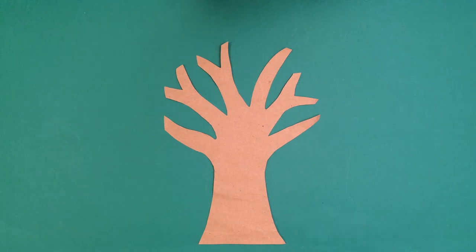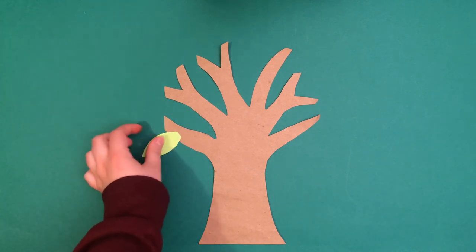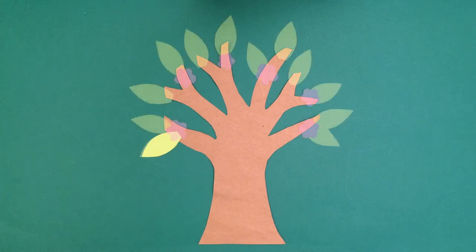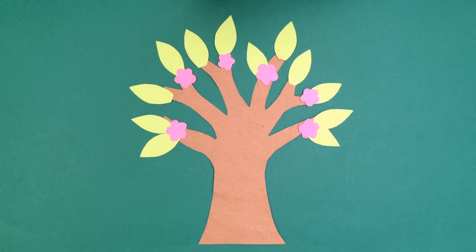For spring, the child can cut out flowers and smaller light green leaves and place them onto the tree. You can explain that the plants are waking up in the spring and that the trees need new leaves to collect sunlight so they can be strong enough to make new seeds during the summer.